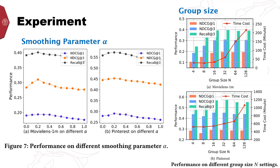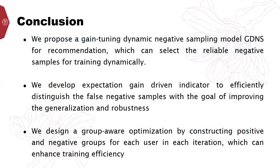So, it is suggested to set the group size not very large in the training stage. In summary, we propose a gain tuning dynamic negative sample model GDNS for recommendation, which can select the reliable negative samples for training dynamically. Moreover, in the proposed model, we develop a negative sampler to efficiently distinguish the false negative samples and a group-wise optimizer to enhance training efficiency.